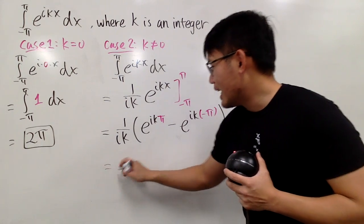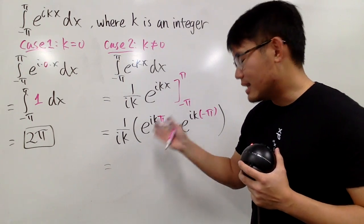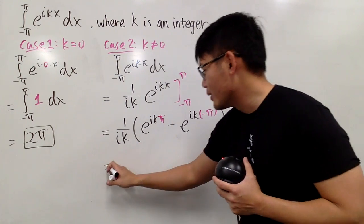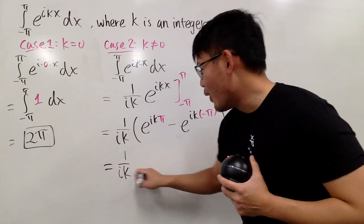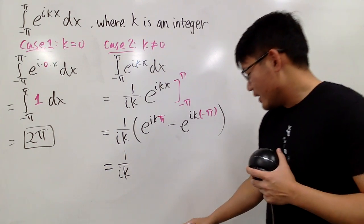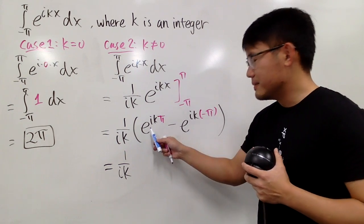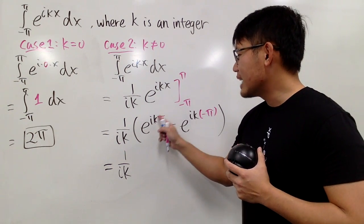Well, I still have the ik on the bottom. As I said, I like to be on the bottom this time, so I'm not going to move around. I will just have 1 over ik all the way in the front. Well, to take care of this, notice we have e to the i times an angle.